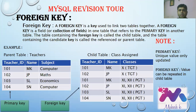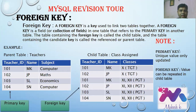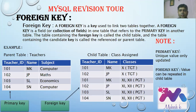Foreign key: a foreign key is used to link two tables together. It is a field or collection of fields in one table that refers to the primary key in another table. The table containing the foreign key is called the child table, and the table containing the primary key is called the reference or parent table. Here, the Teachers table is the parent table and the Class Assigned table is the child table. Both tables share common fields like Teacher ID and Name.